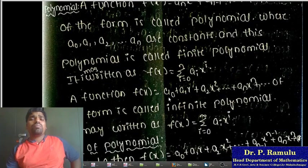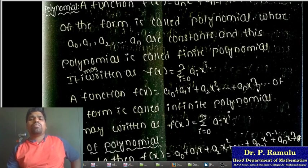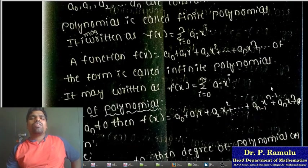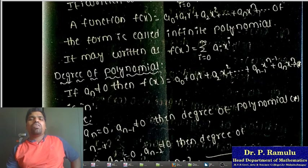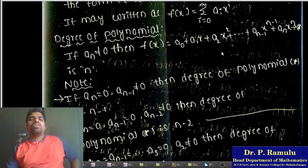If a function is of the form a_0 + a_1 x + a_2 x^2 + ... + a_n x^n + ... and so on, this is called an Infinite Polynomial. A Finite Polynomial is written as f(x) = sum from i=0 to n of a_i x^i, and an Infinite Polynomial is written as sum from i=0 to infinity of a_i x^i.